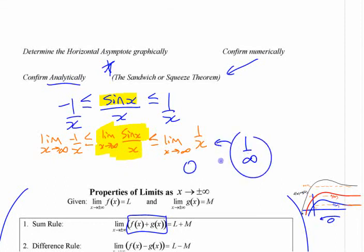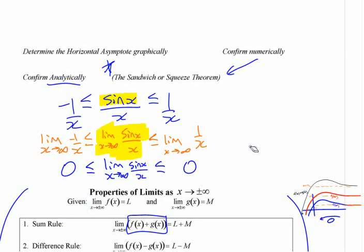One over infinity, you think of that as zero. If this limit is less than or equal to zero and it's greater than or equal to zero on the other side, if something's less than or equal to zero and greater than or equal to zero, what must be true? It has to be zero. Therefore, three little dots, therefore, in a triangle. Therefore, limit as x approaches infinity of sine of x over x equals zero.